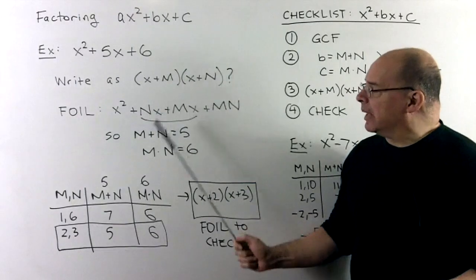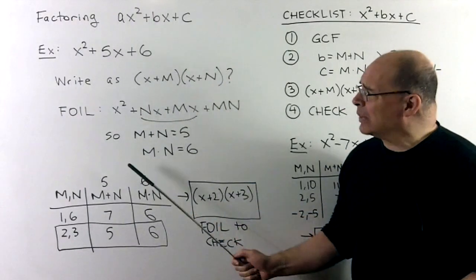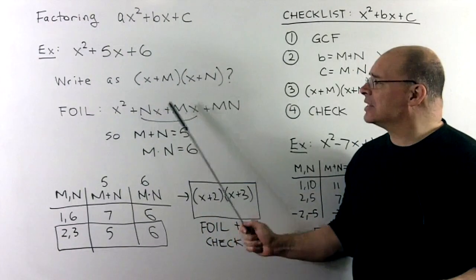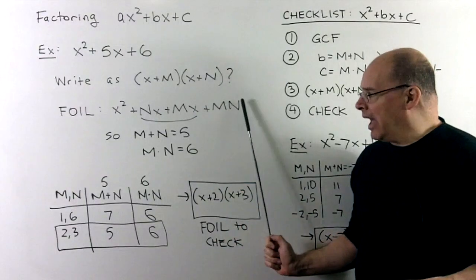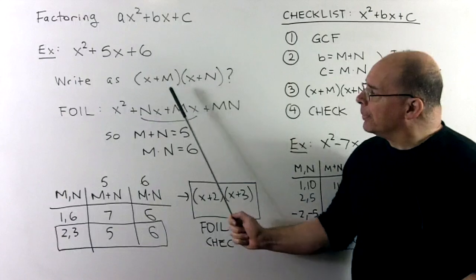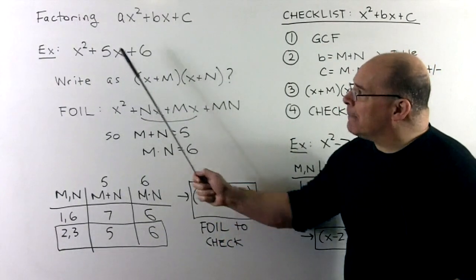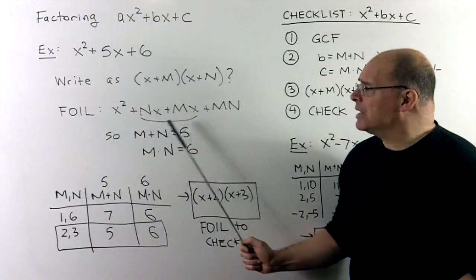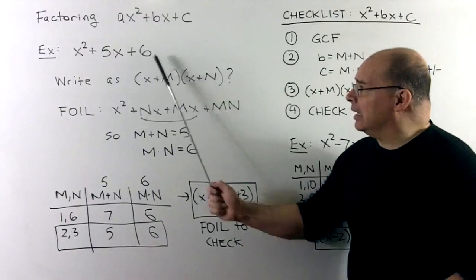When we FOIL — first, outside, inside, last — we get x squared for first, mx for outside, nx for inside, and mn for last. Combining the x terms gives a coefficient of m plus n. Matching to our original quadratic, we need m plus n equal to 5, and m times n equal to 6.